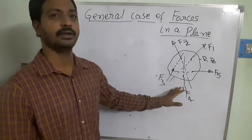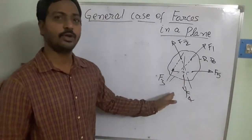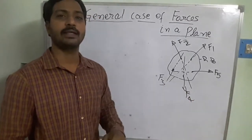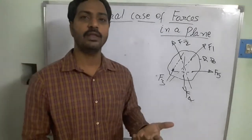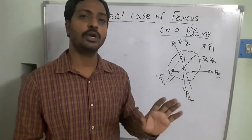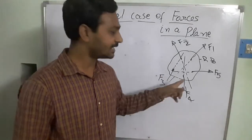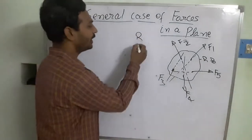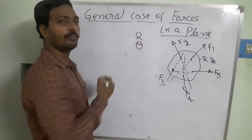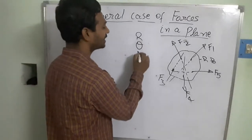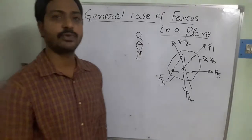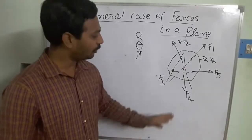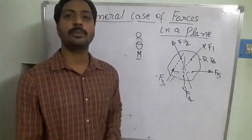Since this body is free — not fixed — forces acting on it will cause it to move. When several forces act on it, we need to calculate the resultant component, find the direction of the resultant, and also find its line of action using moments. I am going to resolve this using three cases.